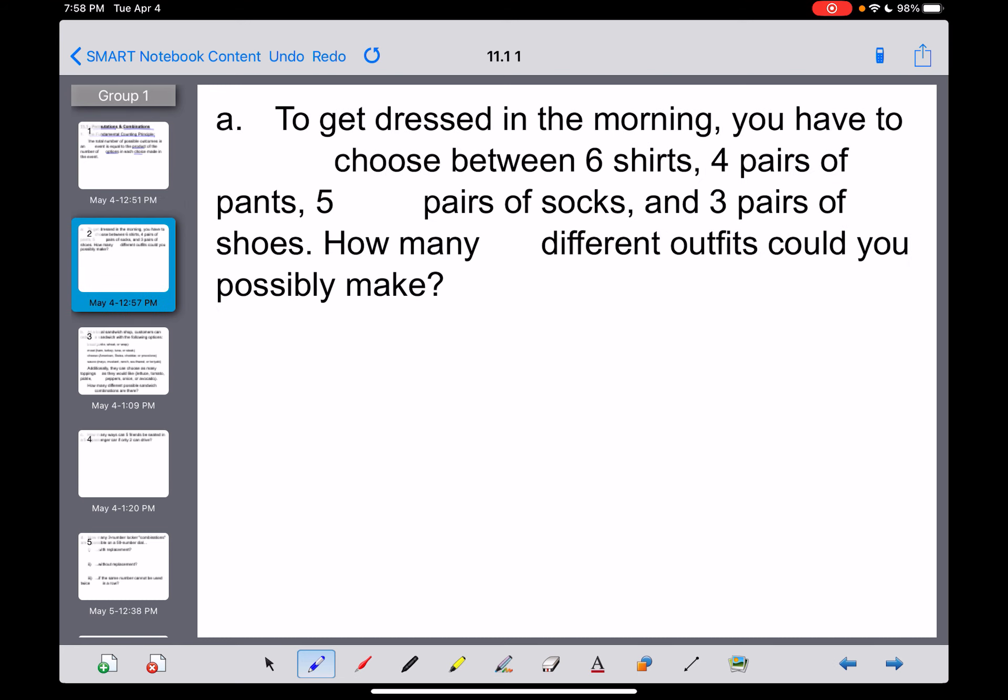Alright, here's the first thing. To get dressed in the morning, you're going to have to make some choices about what it is that you're going to wear. So you open up your closet and you see here that you've got six shirts to choose from, you've got four pairs of pants, you've got five pairs of socks, and then three different pairs of shoes. So the question now becomes how many different outfits could you possibly make?